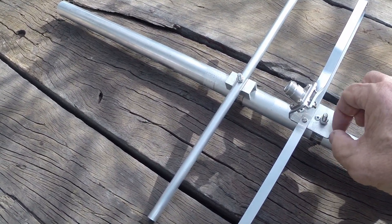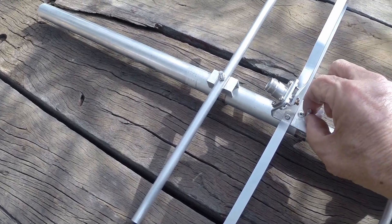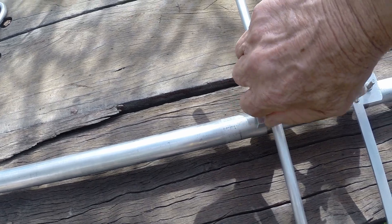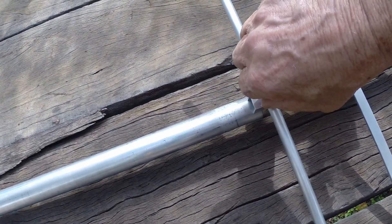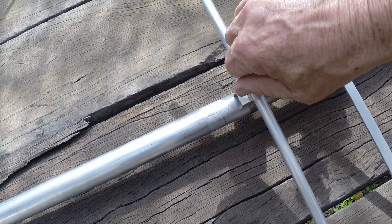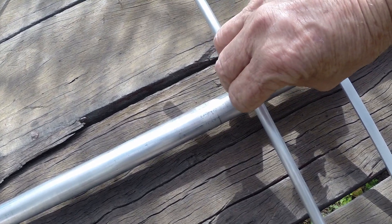There is some ability to tune the J driven element in that you can shorten the element, you can incrementally cut it in to try and bring the thing into resonance. This is not something that's easily done or can be done at all with the folded dipole.